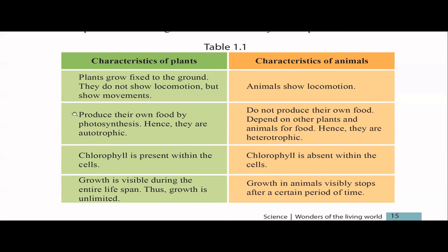Regarding nutrition: plants can produce their own food using photosynthesis, so we call them autotrophic. Animals do not produce their own food — they always depend on plants directly or indirectly — so we call them heterotrophic. Another difference is chlorophyll: chlorophyll is the green substance in leaves needed for photosynthesis. Animals do not have any chlorophyll.